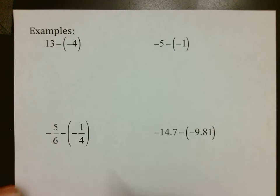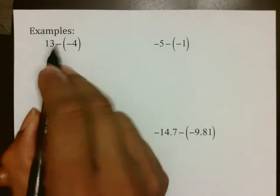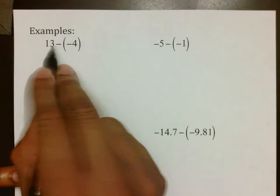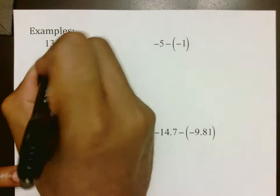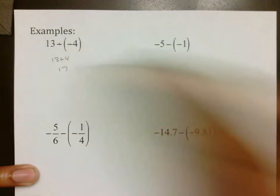So quick examples on this, if you had 13 minus negative 4, once you see a negative right beside another negative by parentheses, I would change it like that, turn it into 13 plus 4, which as we know is just 17.